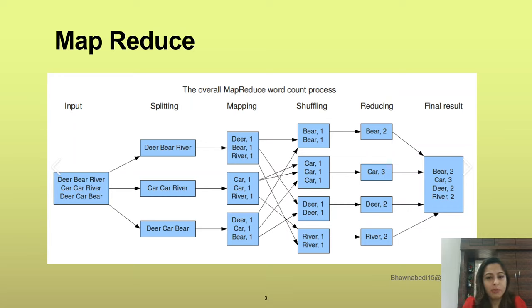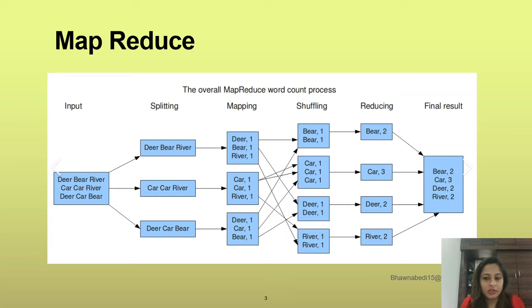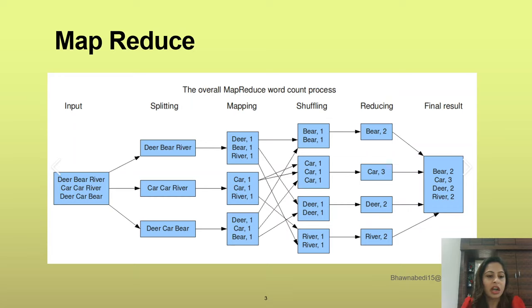Do remember, this MapReduce was not in-memory computation. Looking at the screen, I've captured this from Google Images. You have an input with words: deer, bear, river, car, car, river, deer, car, bear. So these are the different words that you have.